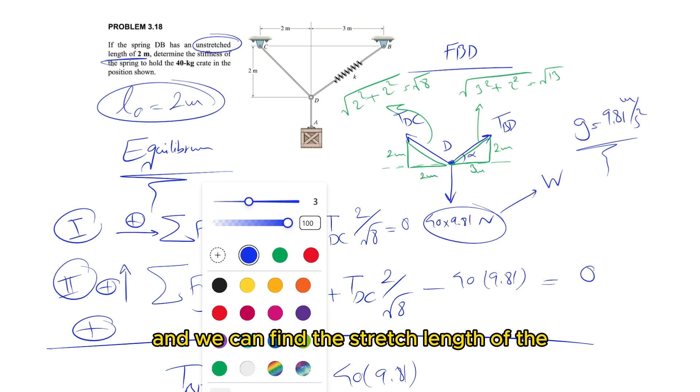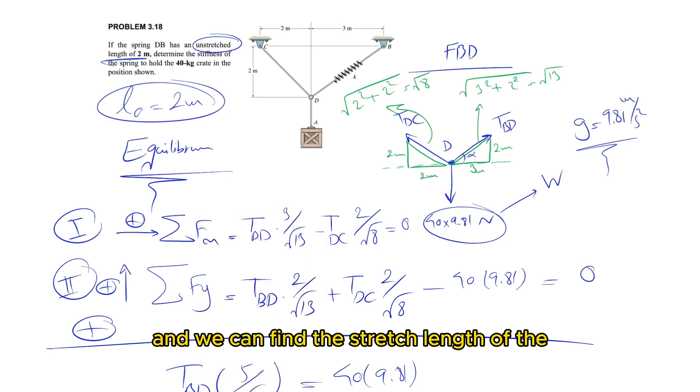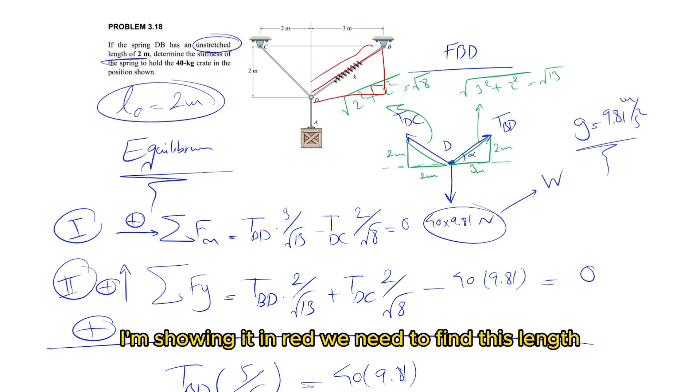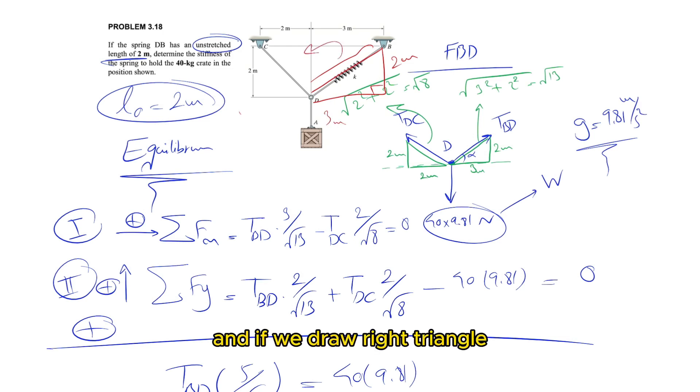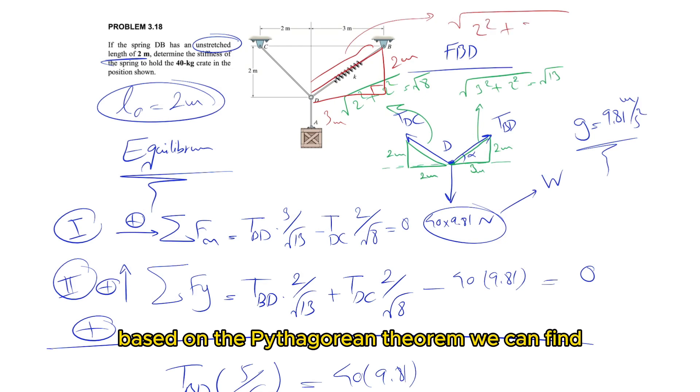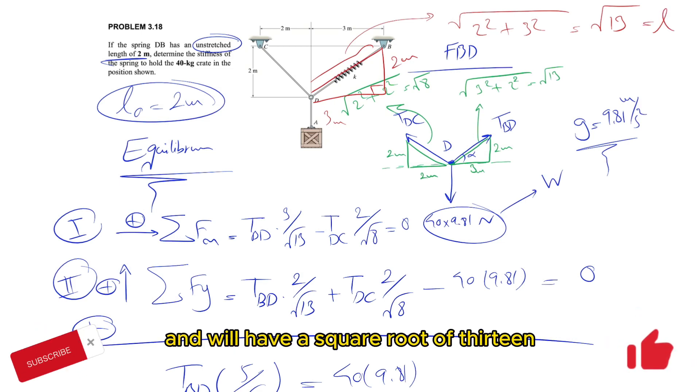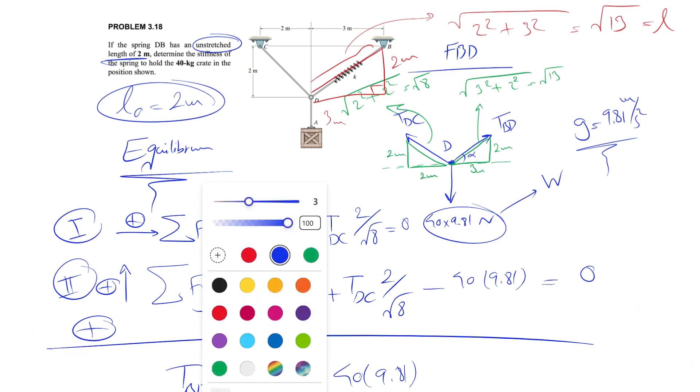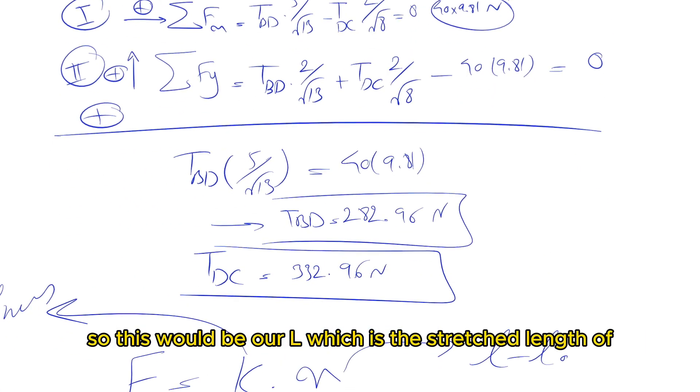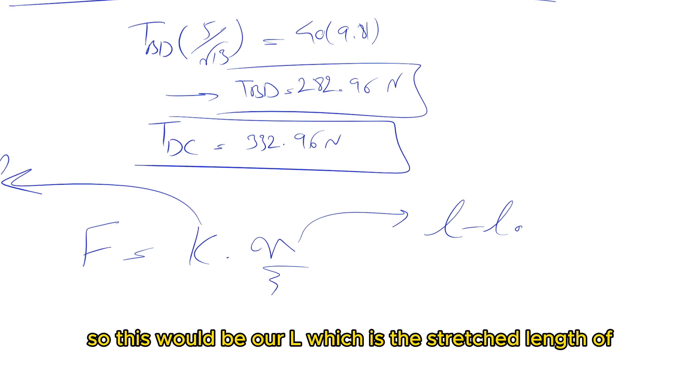We can find the stretched length of the spring. Drawing a right triangle, we know this side is 2 meters and this is 3 meters. Based on the Pythagorean theorem, we have 2 squared plus 3 squared, which is 9 plus 4, giving us square root of 13. This is our L, the stretched length.